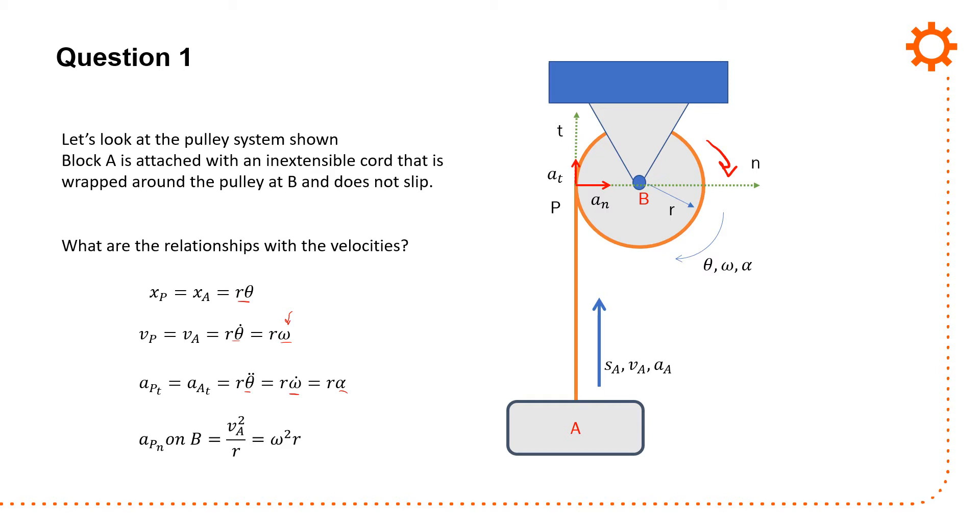The normal acceleration on point P on B is going to be vA squared over r. You can also see that you could substitute omega r, which equals v, and v squared equals omega squared r squared. Omega squared r squared over r yields this relationship here, so this is also a really important relationship when you're dealing with normal acceleration. Now of course acceleration of A is not, because it is in straight line motion. Acceleration at point P is in curvilinear motion.